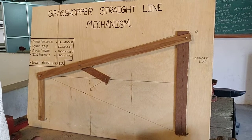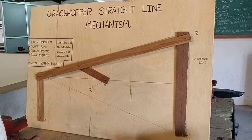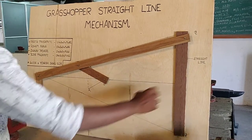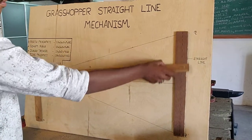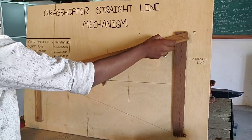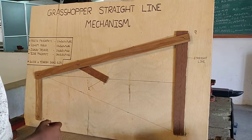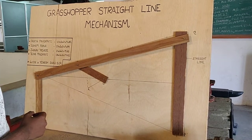You can see the to and fro motion of this grasshopper mechanism. It has 4 bars, as you can see: 1, 2, 3, and 4.